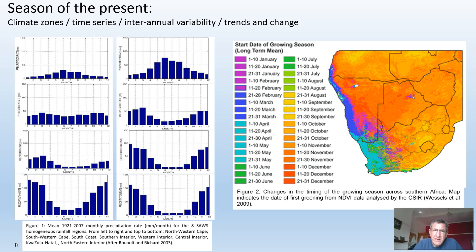South Africa is very unique in the sense that we have a very wide range of climate zones. The graphs on the left show typical rainfall in different climate zones, and the image on the right shows the onset of growth of plants. We see very different times of year in which plants start to grow because they're responding to different climate zones. The long-term question is: what's going to happen to those climate zones? Are they going to change, merge, or stretch further apart?